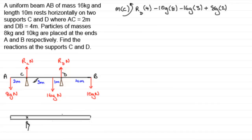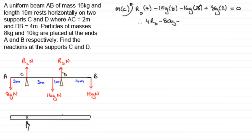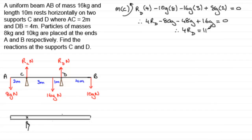All forces are done. Since the beam is in equilibrium, the resultant moment equals zero. So we've got: 4RD minus 80G minus 48G plus 16G equals zero. Adding these G terms together gives minus 112G. Adding 112G to both sides: therefore 4RD equals 112G.